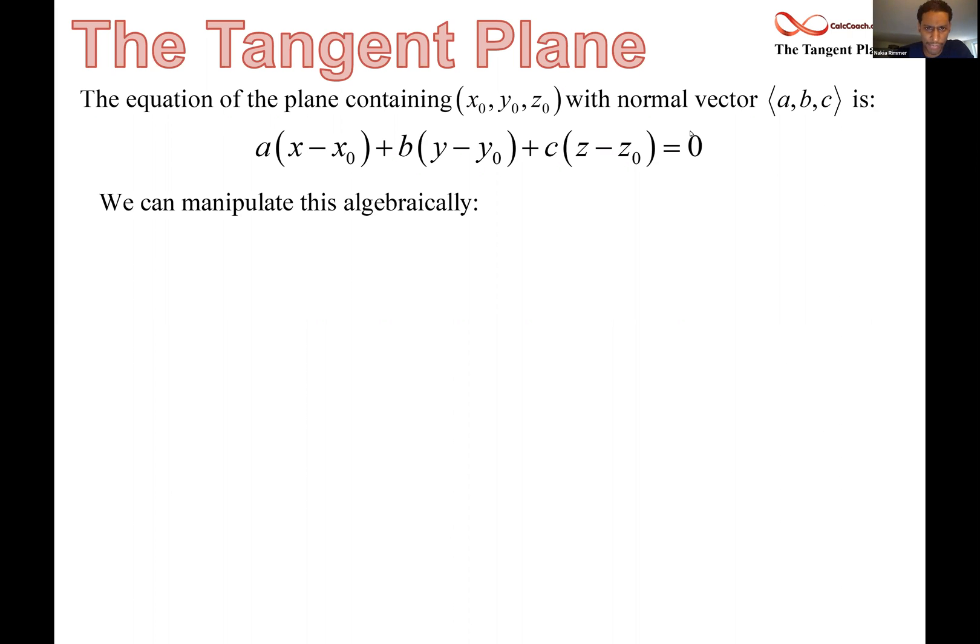Now let's start manipulating this a little bit, juggling it around. With the goal in mind of solving for z minus z naught, let's move the c term over to the other side by subtracting it. And then let's divide everything by negative c.